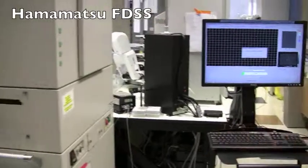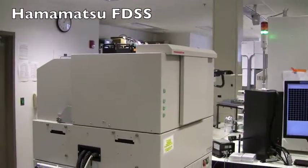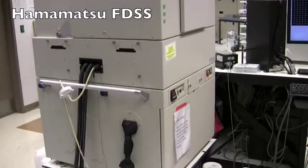The Vanderbilt High-Throughput Screening Facility employs a number of advanced reader modalities, including kinetic screening. This is a Hamamatsu FDSS. This device enables acquiring fluorescent and luminescent data on an entire multi-well plate simultaneously.